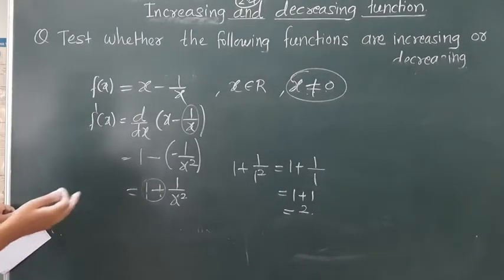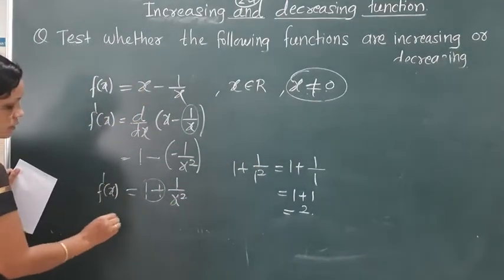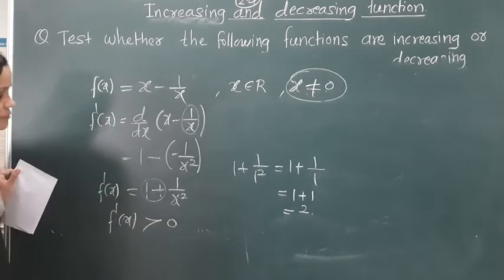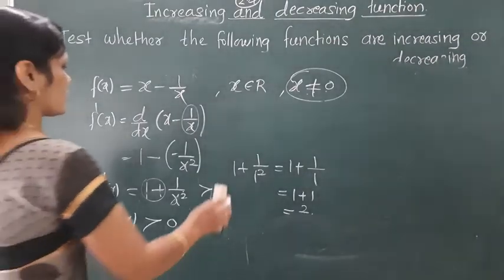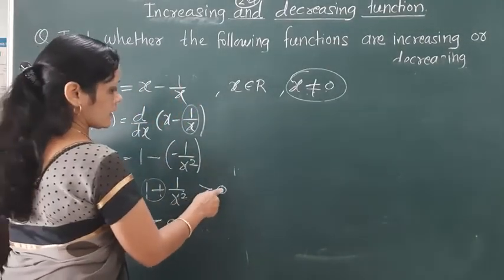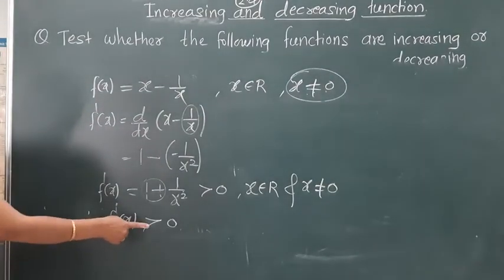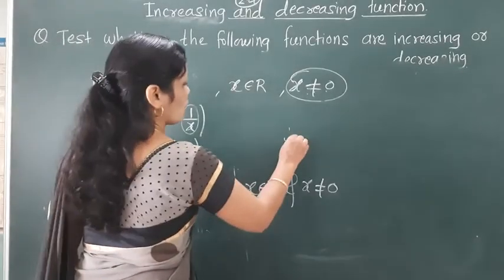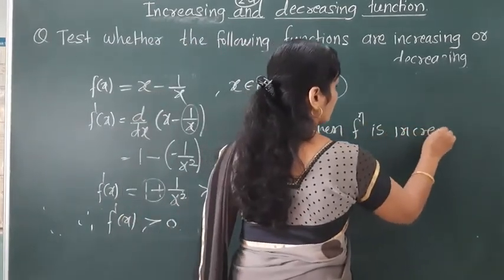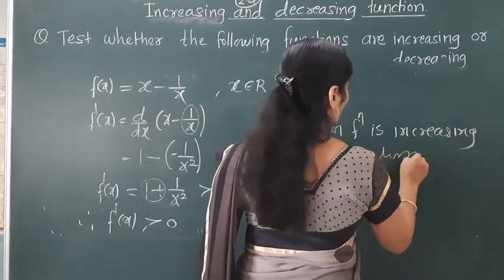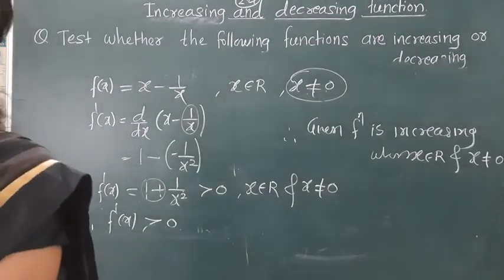The value of f'(x) = 1 + 1/x² is always positive — it is not 0. Therefore, f'(x) is strictly greater than 0. Since 1 + 1/x² is strictly greater than 0 for all x belonging to R where x ≠ 0, the given function is increasing when x belongs to R and x is not equal to 0.